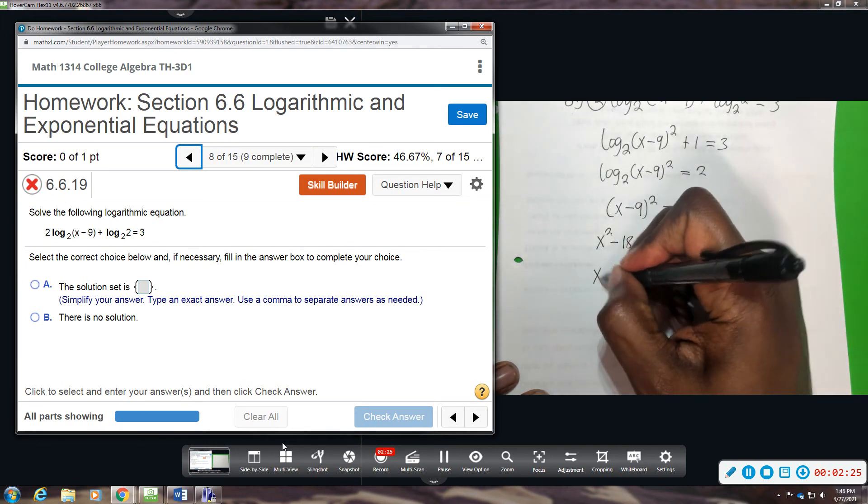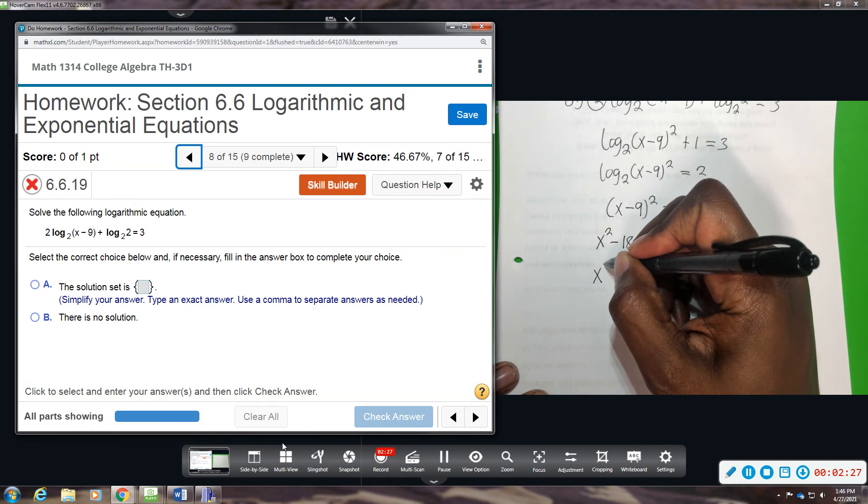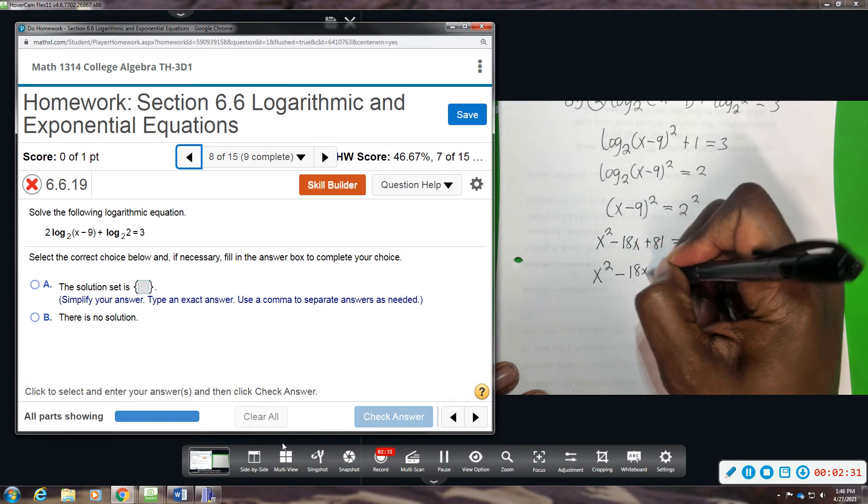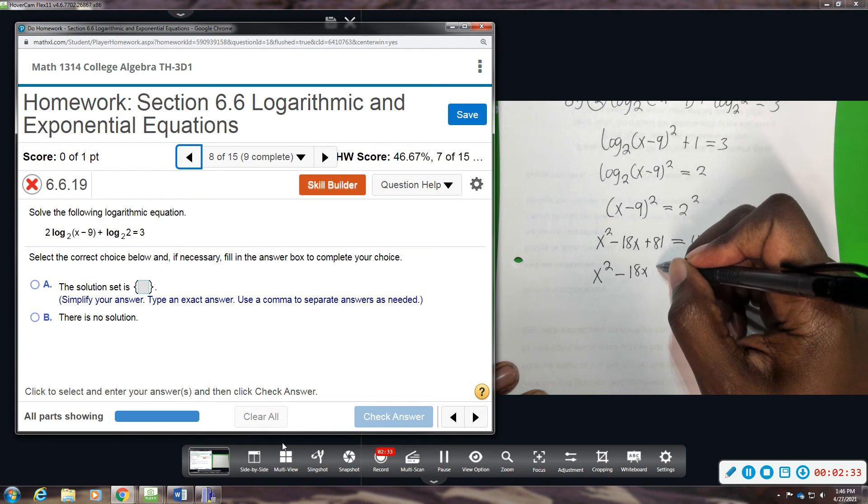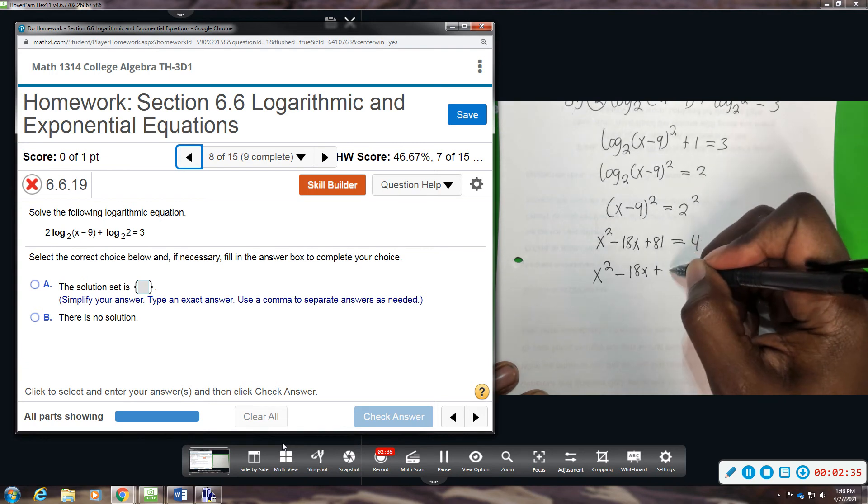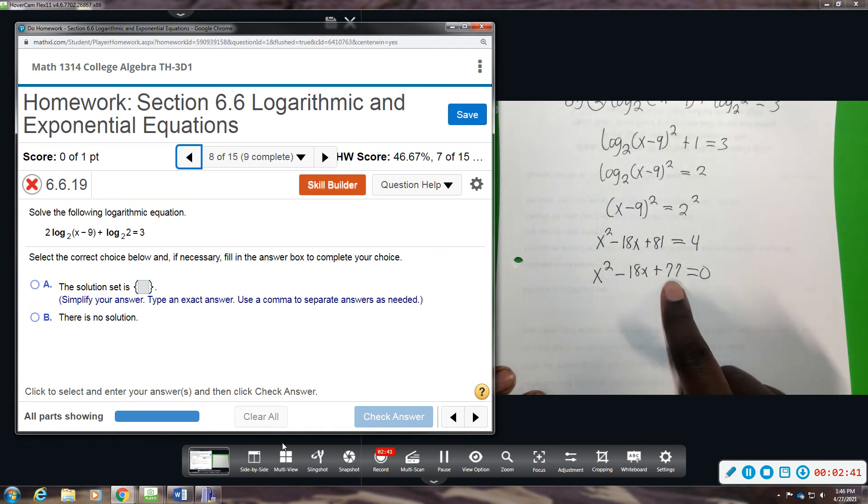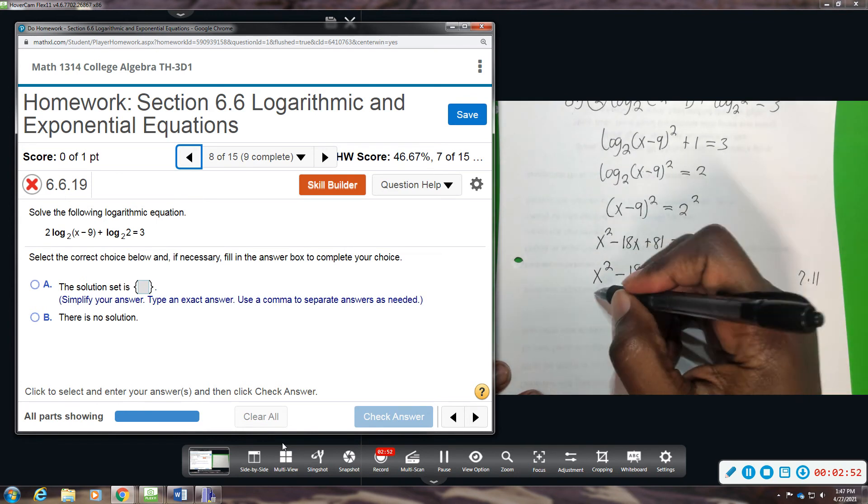And that will give us x squared minus 18x plus 77 equals 0. Factors of 77, 7 times 11, and that will, if you add, give you 18. 7 plus 11 will add to 18. So this will factor.